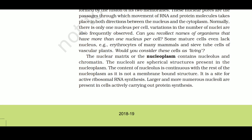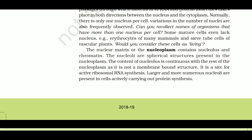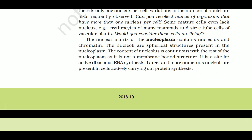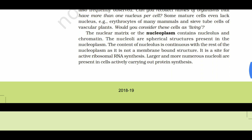Normally there is only one nucleus per cell, though variations in number are observed. Some mature cells even lack a nucleus - for example, erythrocytes of many mammals and sieve tube cells of vascular plants. These cells are still considered living. The nucleoplasm contains the nucleolus and chromatin.